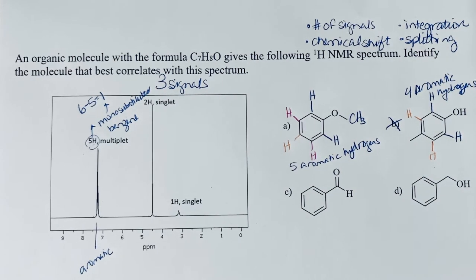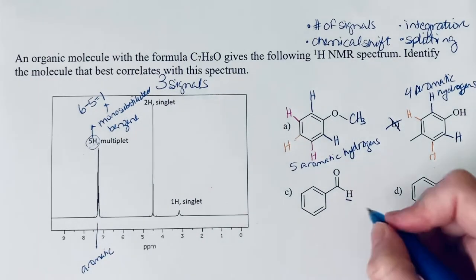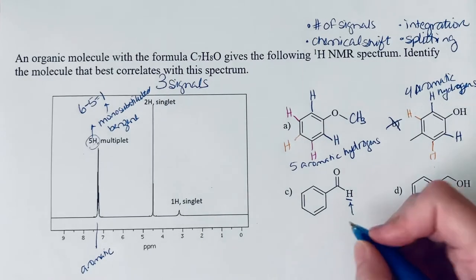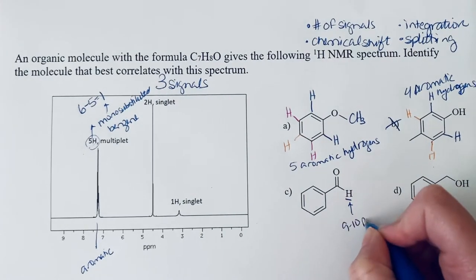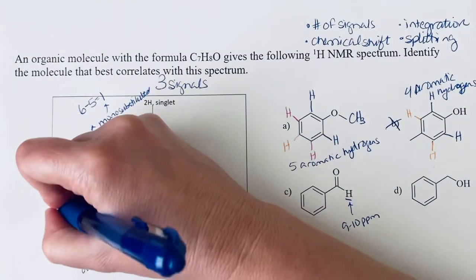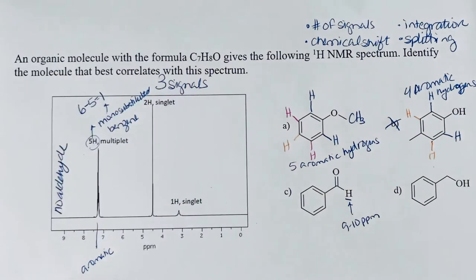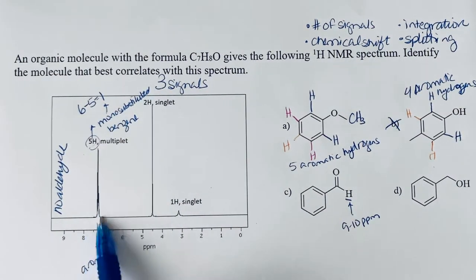There's a few things that could cause us to eliminate some of these answers. And this aldehyde signal, we should be able to pick out really easily at 9 to 10 ppm. And there's nothing. There's definitely no aldehyde. Because that's where it would be. And this would only have the aldehyde and signals here. So it wouldn't explain at all what's going on with these signals.